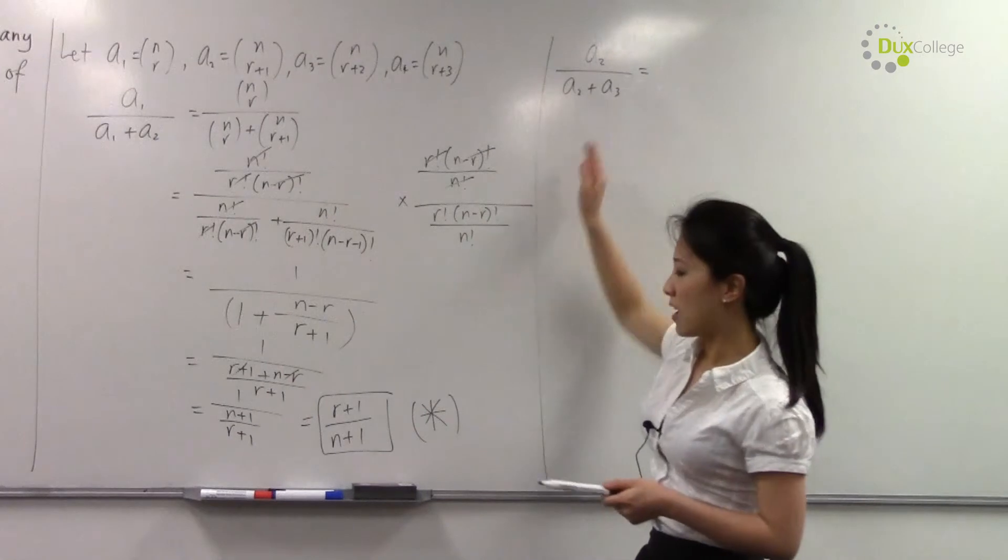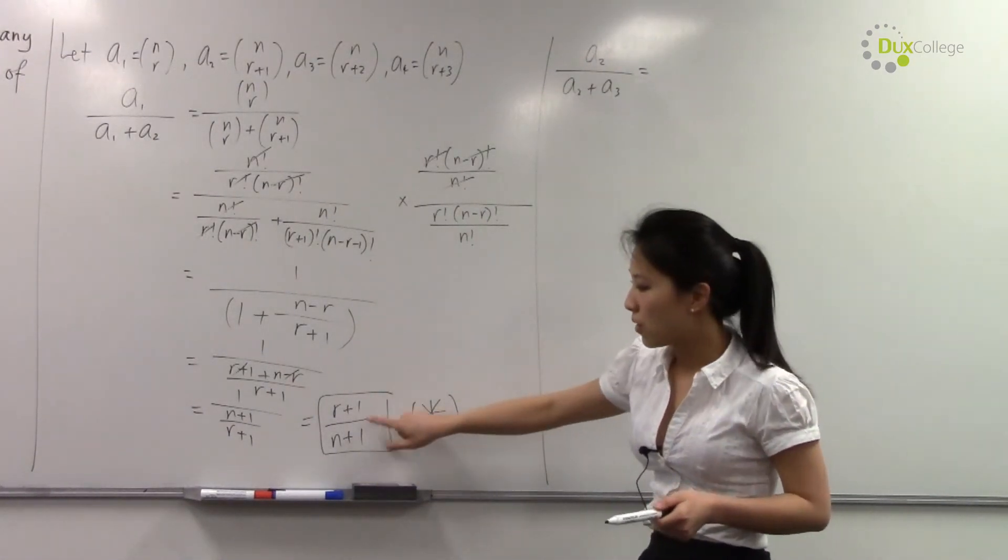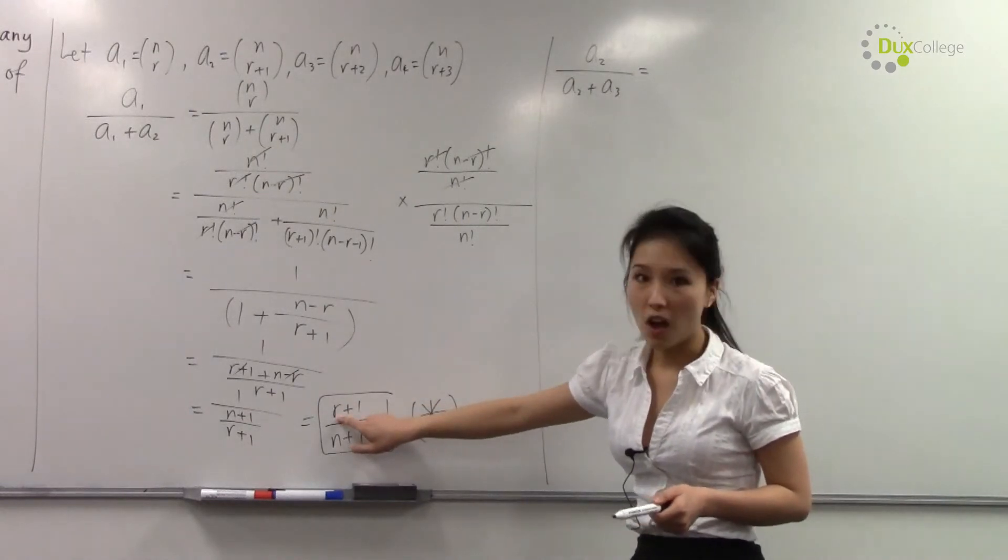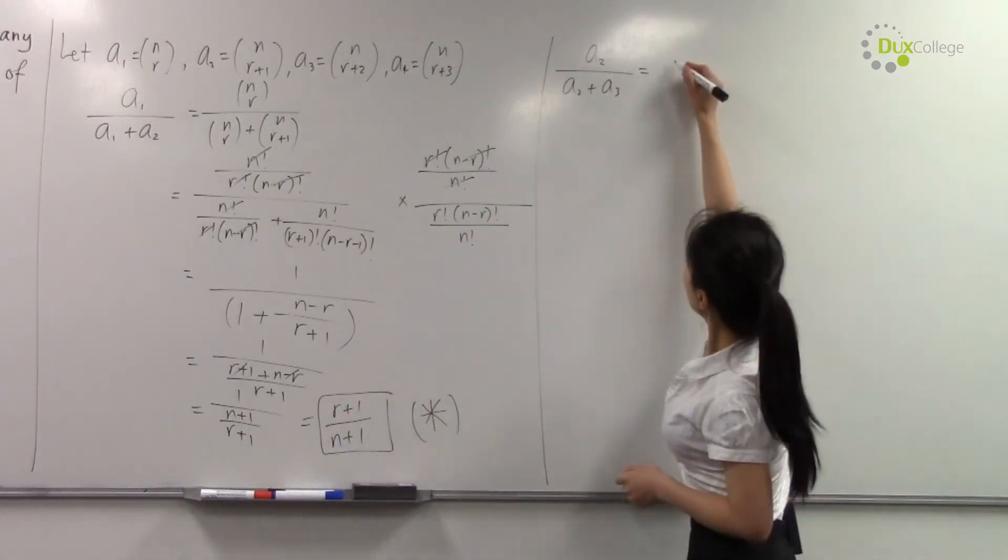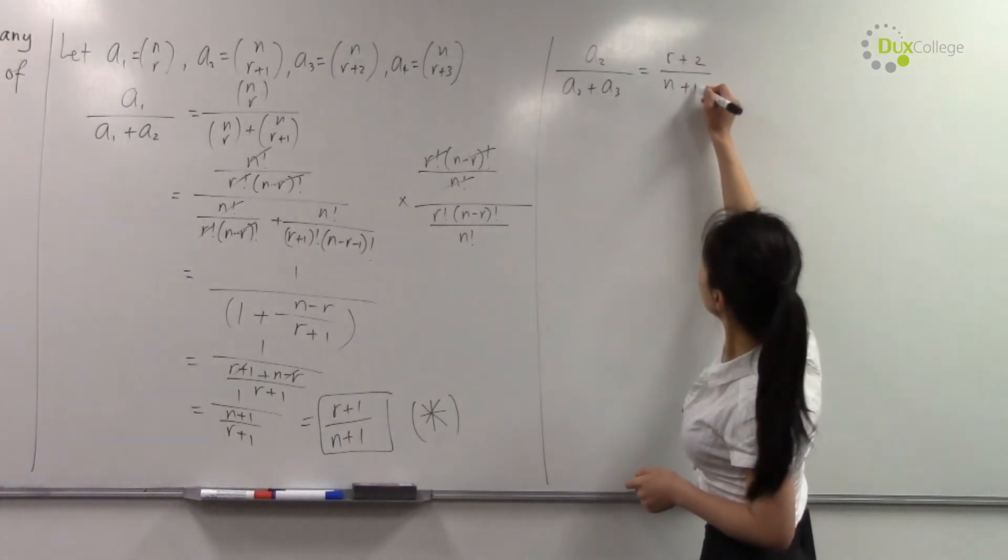Now it's actually unnecessary to go through all of this algebra again. a₂ over a₂ plus a₃ is equivalent to replacing this value where you're replacing r with r+1. So if you replace r with r+1, you get (r+2) over (n+1).